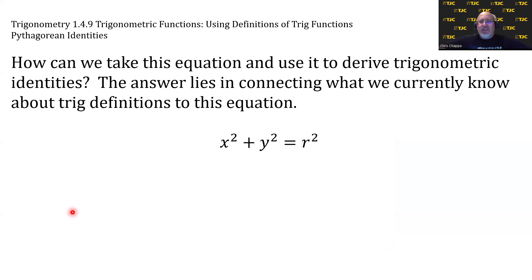But how can we take this equation and use it to derive trigonometric identities? The answer lies in connecting what we currently know about trig definitions to this equation, specifically these definitions which have x's, y's, and r's.